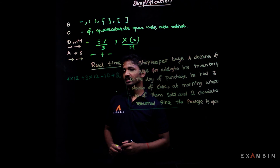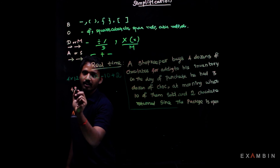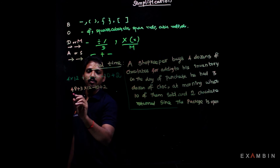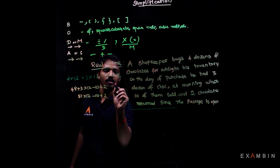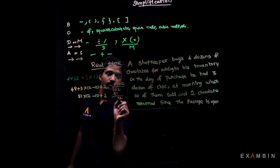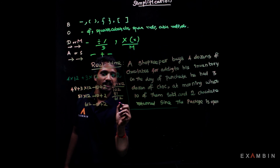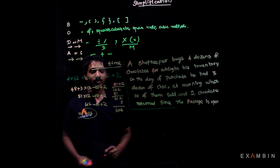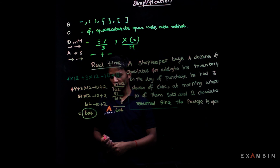If we solve this without considering the BODMAS rule: 4 into 12 is 48, then 48 plus 3 equals 51, into 12 minus 10 plus 2, and 51 into 12 gives an answer of 604. Would you believe it? Because he has at most only 7 dozens of chocolates, but the answer is coming out to 604. So what do we have to do?